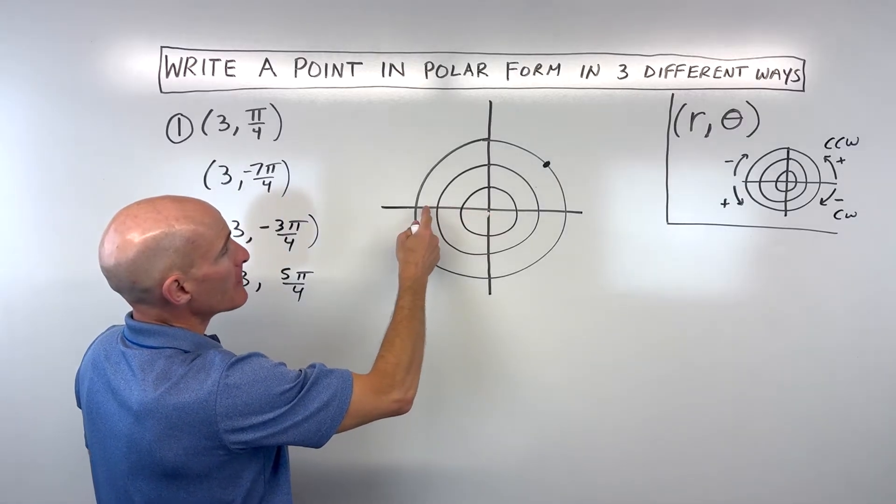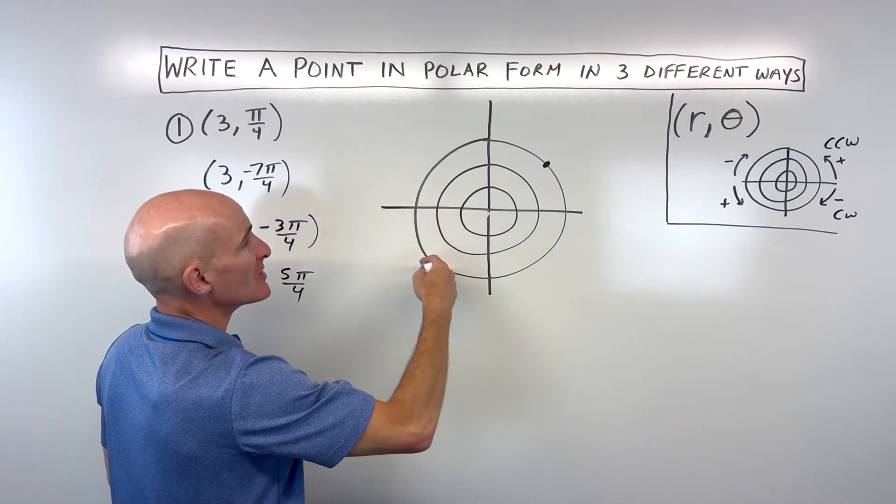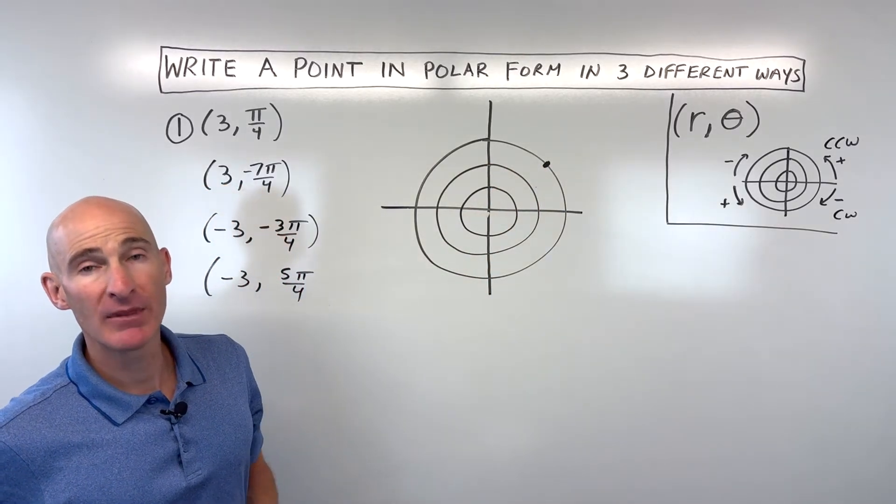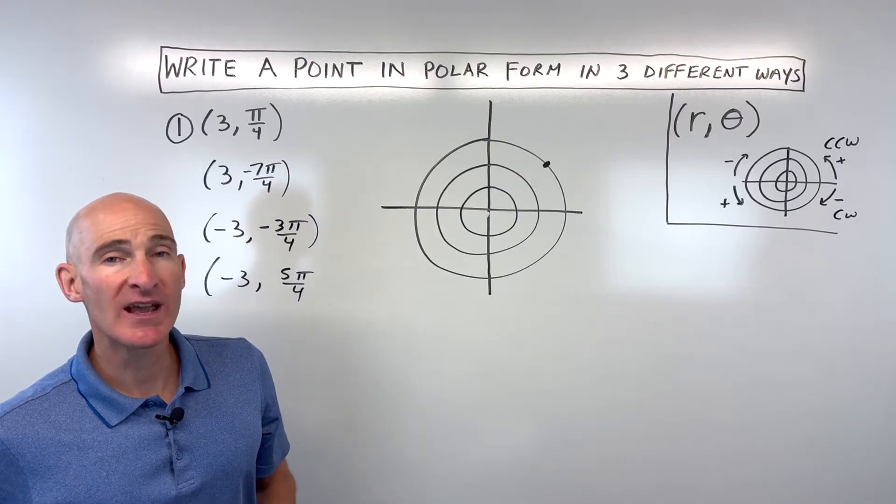Same thing here. I could go negative three and rotate as many ways either direction. As long as I end up at that point, it's going to be another way to represent that polar coordinate.